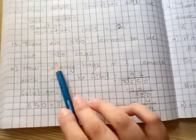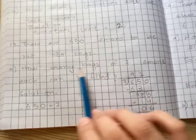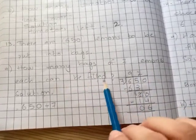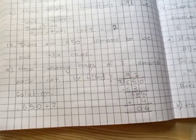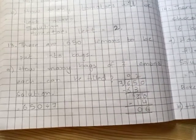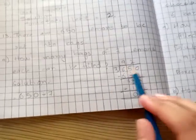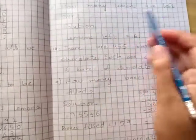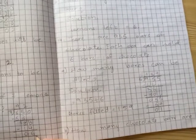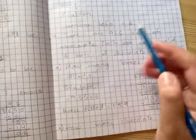There are 650 lemons to be put into bags. How many bags of 7 lemons each can be filled? If you put 7 lemons in each bag, then how many bags will be made? 650 divided by 7, so we have 92 bags. Total bags are 92. And how many lemons are left over? The remainder was 6, so lemons left is equal to 6.